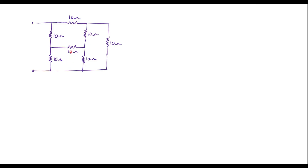Here we can observe that 10, 10, 10 ohm resistors are connected in a delta fashion. Let me convert this into star. If we convert this into star, the star network will appear like this. Let me call this as R_A, this as R_B, and this as R_C.